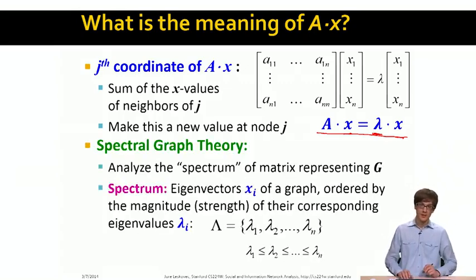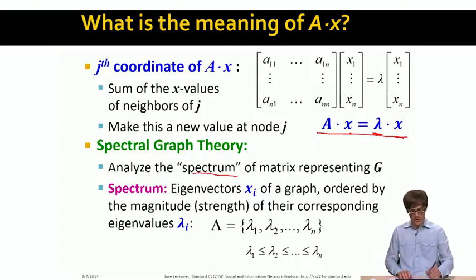So now, what is the spectral graph theory? Spectral graph theory is really asking about, what is the spectrum of a given matrix representation of our graph G? And what do we define as spectrum? Spectrum is simply a set of eigenvectors ordered by their magnitude, and their corresponding eigenvalues.